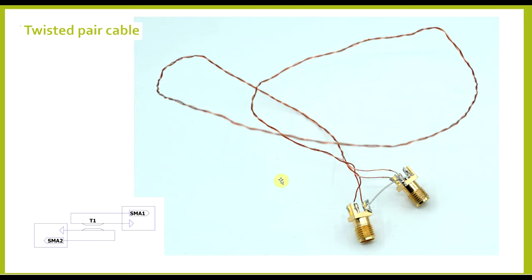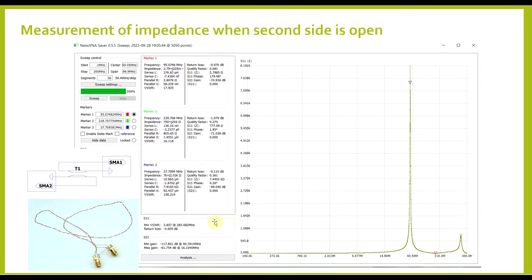To test this out, I took about 47 centimeters of twisted wire and connected it to a couple SMA connectors. So one end of the twisted pair goes to the SMA connector, the other two to ground, and the same on the other side. So the two signal lines are at opposing ends. And if we measure this thing with the VNA, first of all, I measure the impedance from one side when the second side is left as an open circuit.